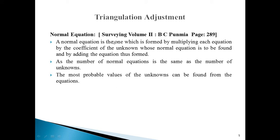You can study this topic from the surveying textbook by B.C. Punmia starting from page 289. A normal equation is one which is formed by multiplying each equation by the coefficient of the unknown whose normal equation is to be found, and then adding the equations. The number of normal equations equals the number of unknowns, so the most probable value of each unknown can be found. We form the normal equation by multiplying the algebraic coefficient of unknown terms and then forming that equation.